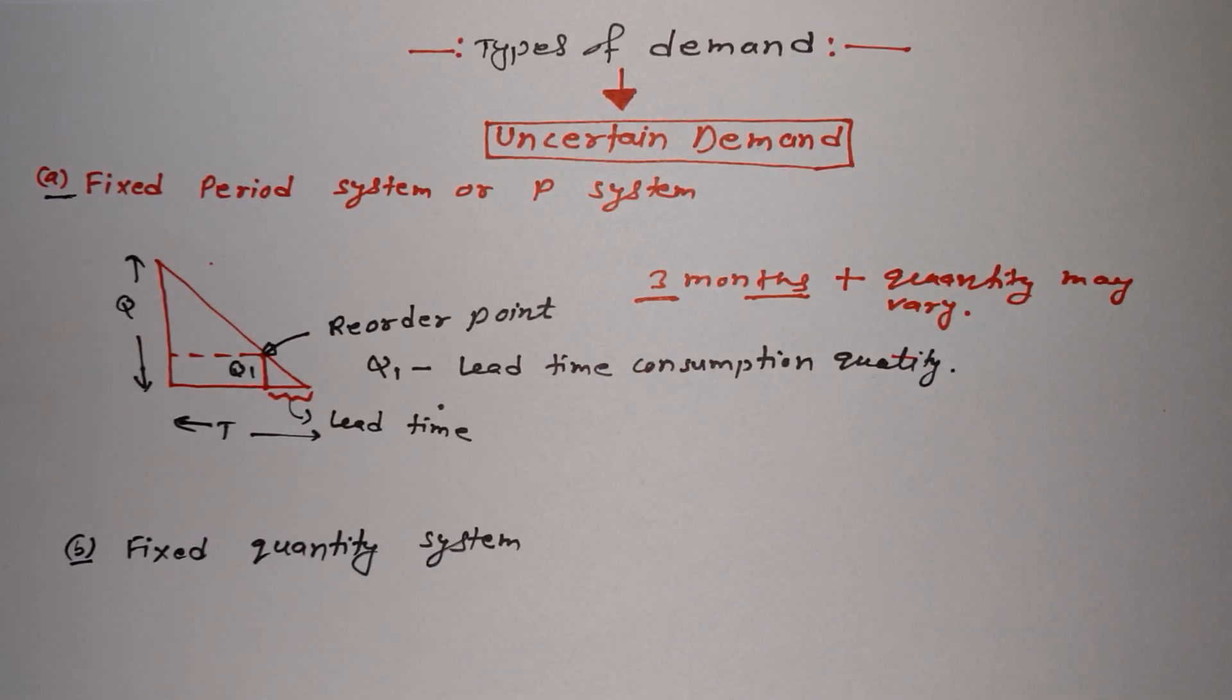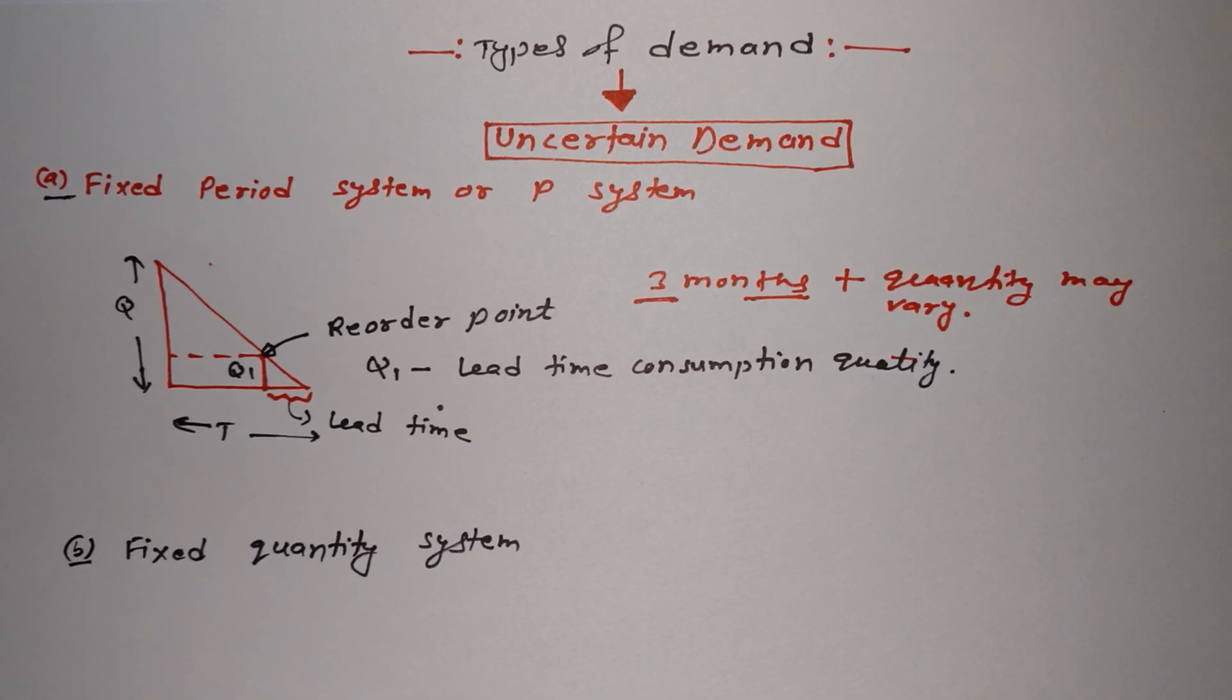Next is fixed quantity system. So what is fixed quantity system? Basically, in fixed quantity system, the time period is not fixed. Maybe it will depend on our consumption.